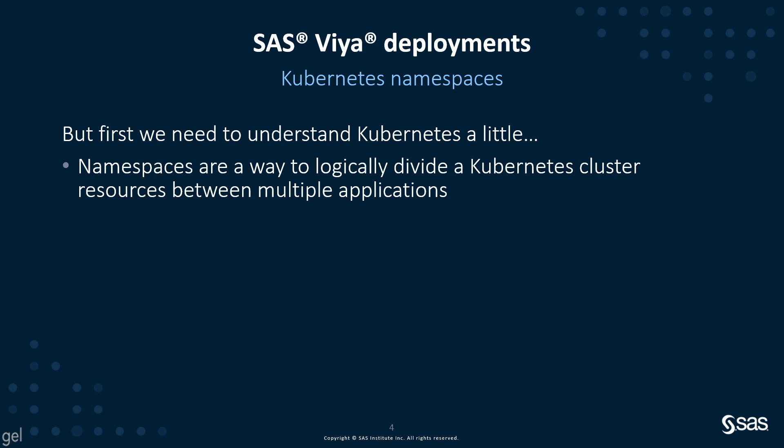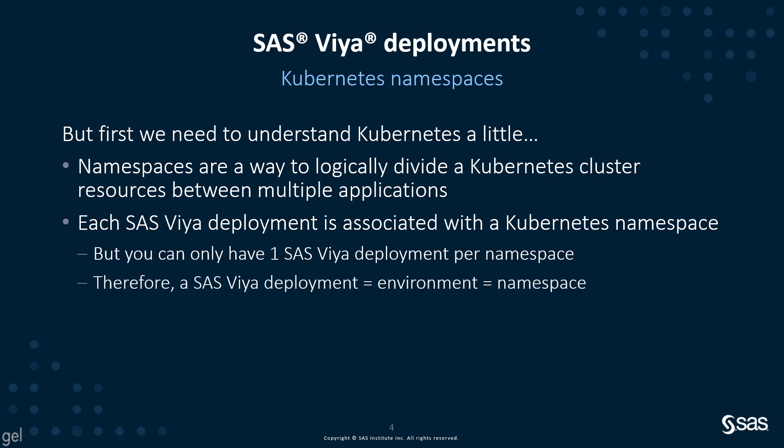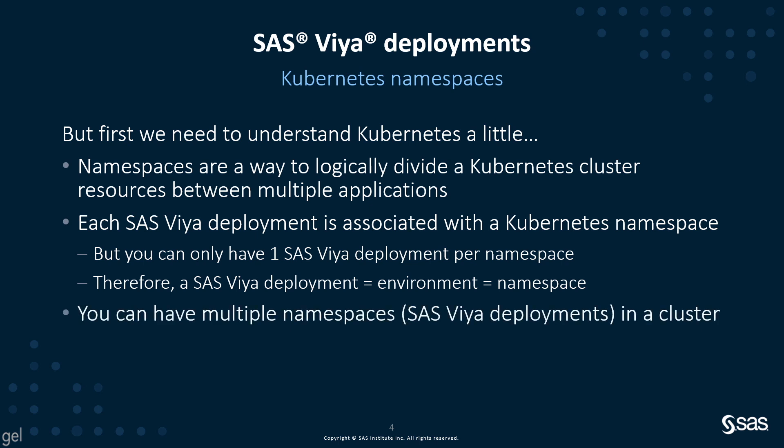Before we start talking about SAS Viya deployments, we need to understand a little about Kubernetes. First, I'd like to talk about the concept of namespaces. Namespaces are a way to logically divide a Kubernetes cluster's resources between multiple applications. Each SAS Viya deployment is associated with a Kubernetes namespace, but you can only have one SAS Viya deployment per namespace. Therefore, a SAS Viya deployment is a SAS environment, which equals a namespace. You can have multiple namespaces, or SAS Viya deployments, in a single Kubernetes cluster.